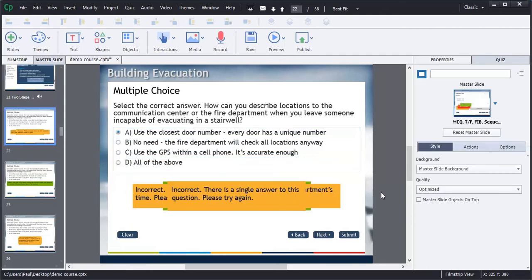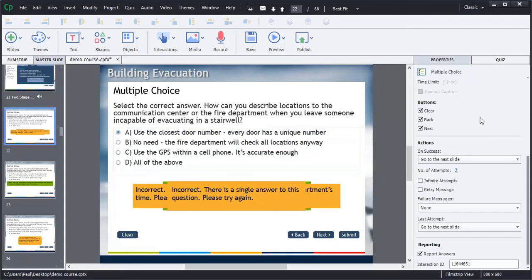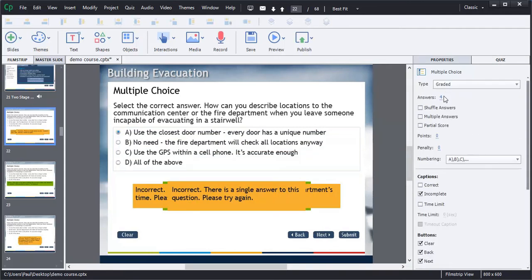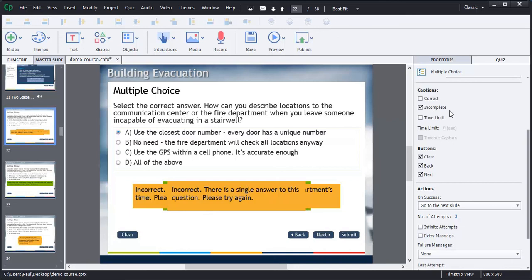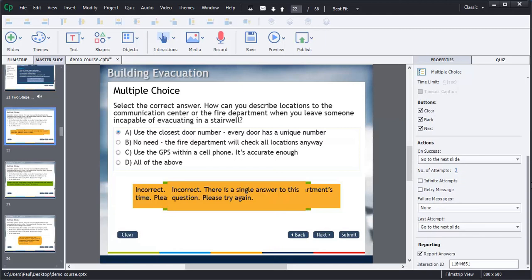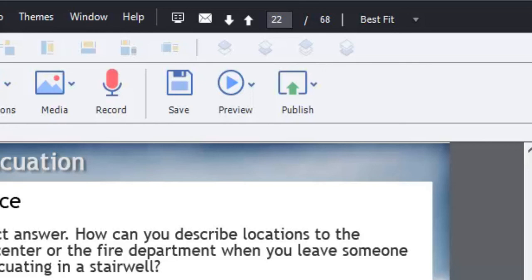So we have this multiple choice question set up. Again, just to summarize here: this is being treated like a knowledge check, so there are no points assigned to it. The only default caption is an incomplete caption. The rest of these are specific to the answers that we have. We have all of our default buttons: clear, back, next, and of course submit. If they are successful, they will go to the next slide. They have three attempts to do this correctly, and if they ultimately cannot get this correctly, we will move them on to the next slide as well.